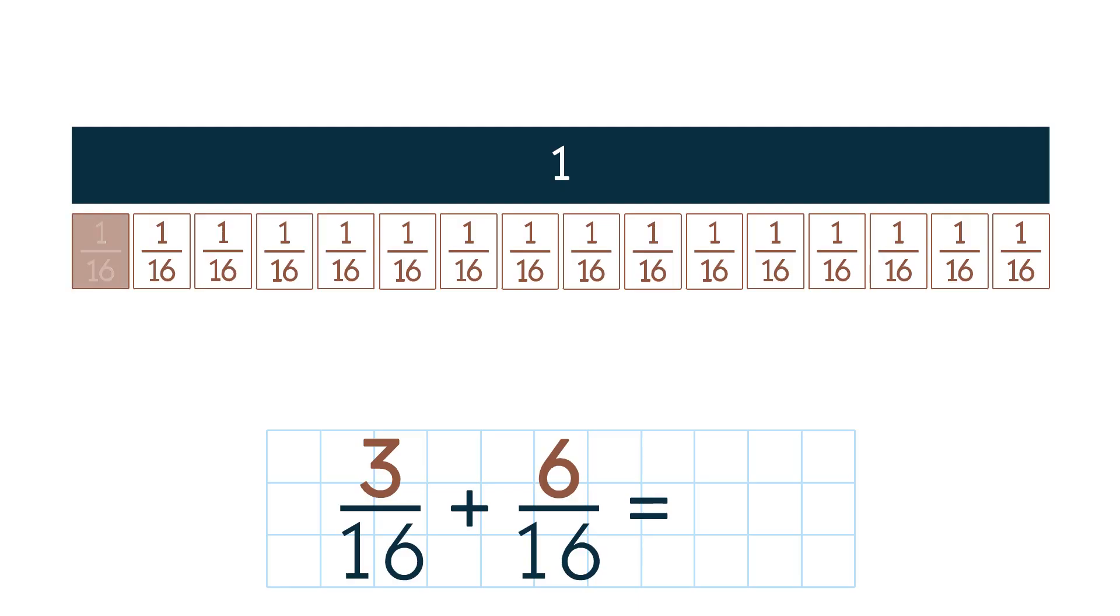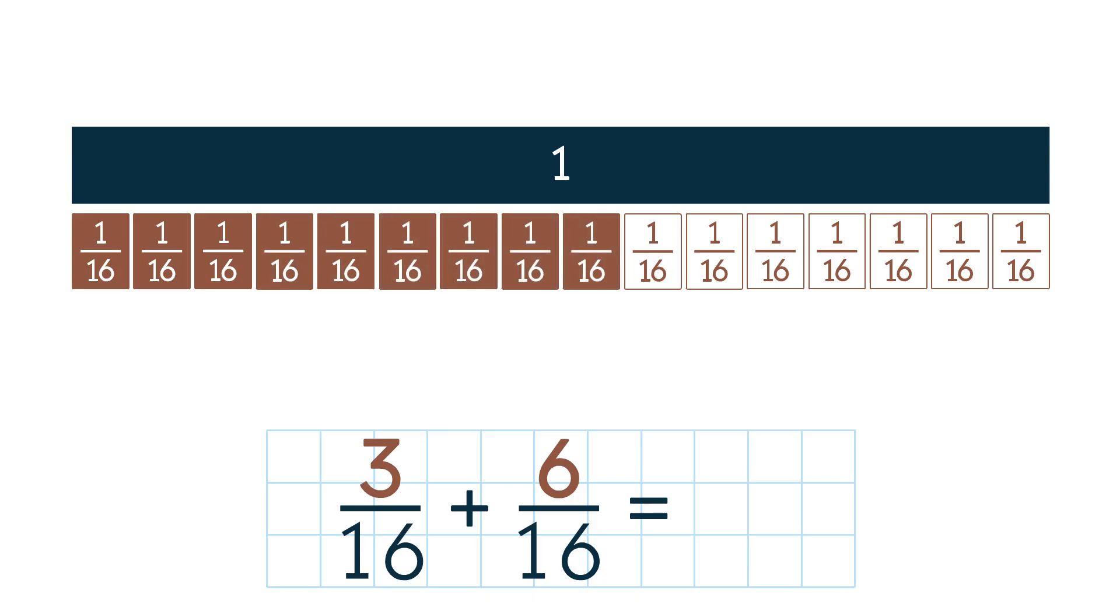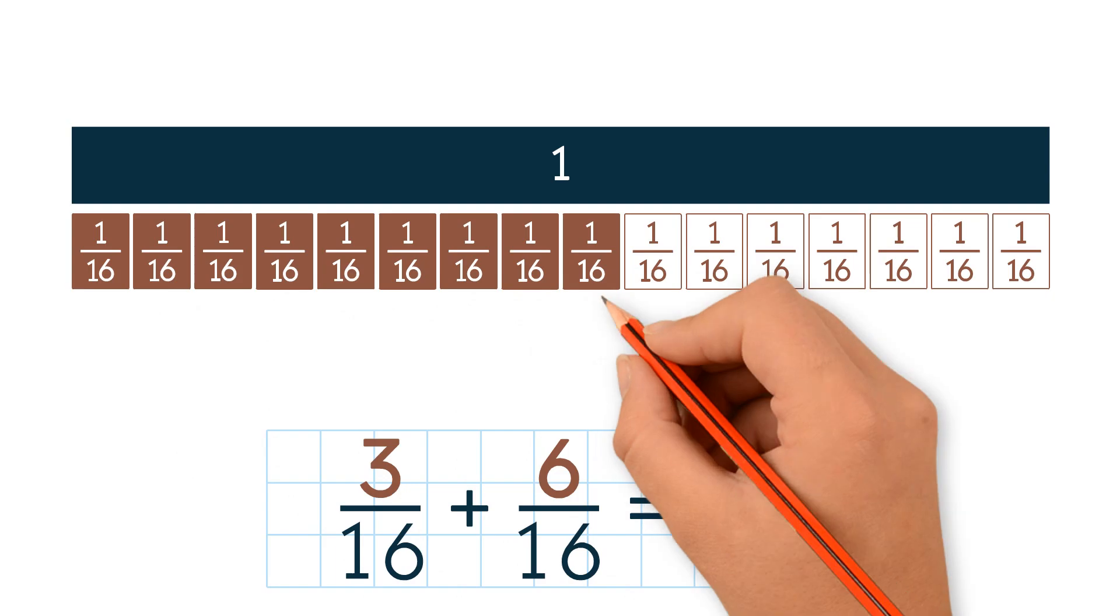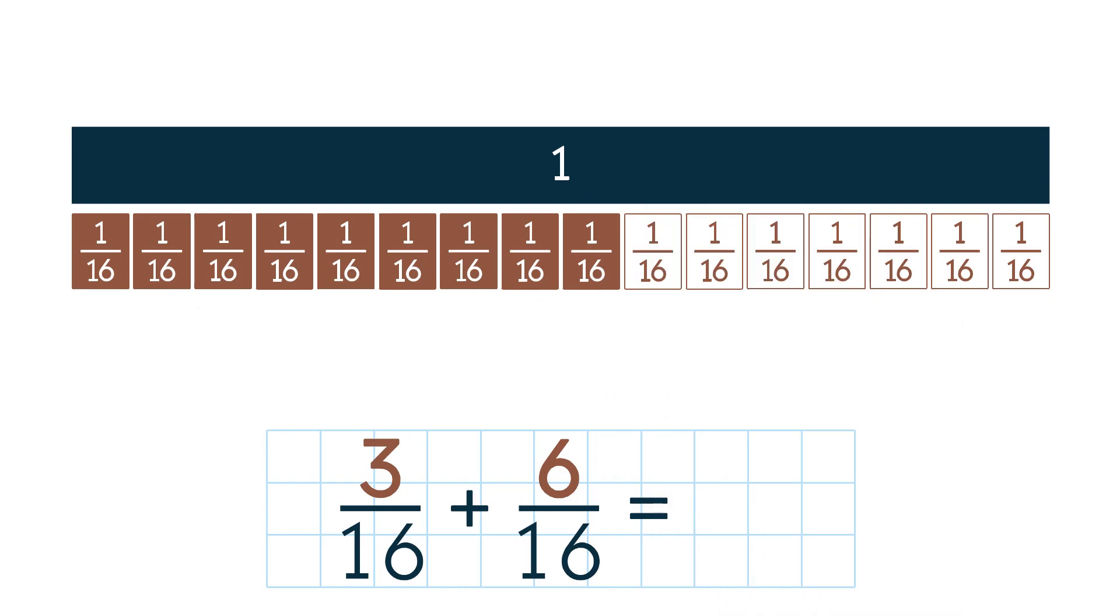First we shade in 3 sixteenths. Then we shade in 6 sixteenths. We shaded in 9 sixteenths sized parts, so the answer is 9 sixteenths.